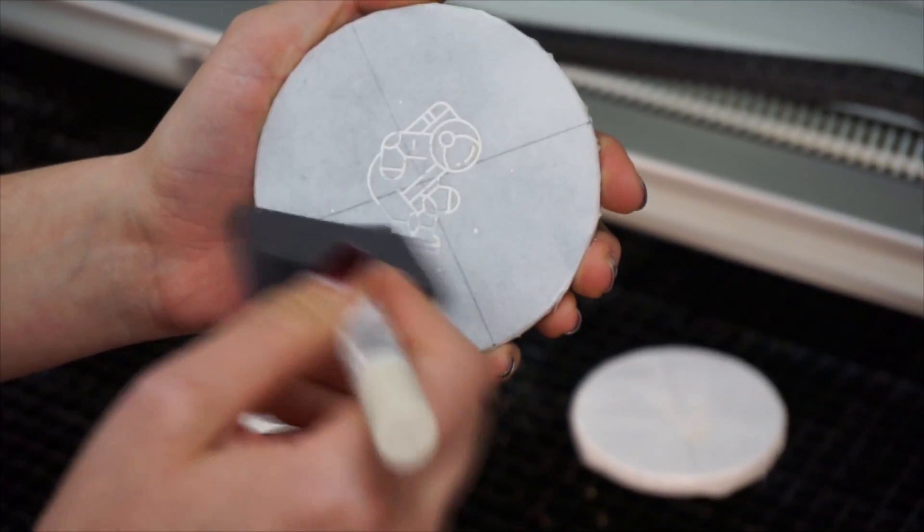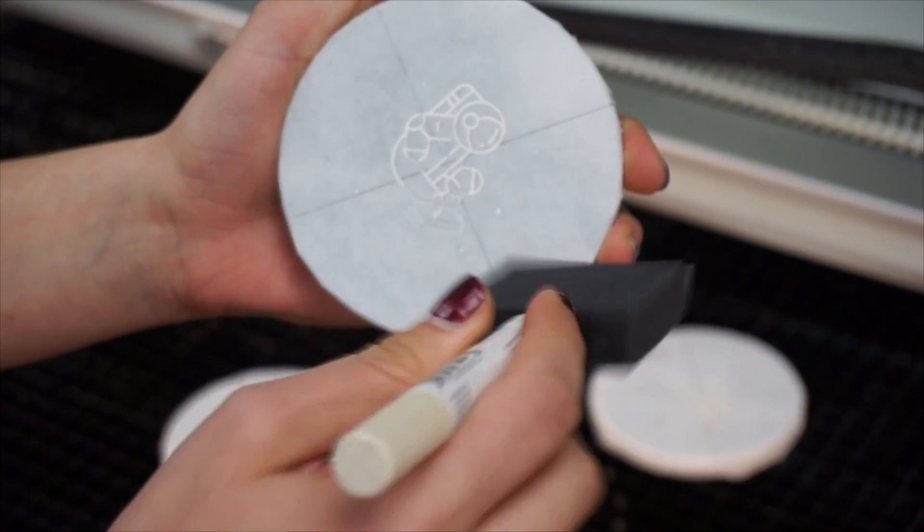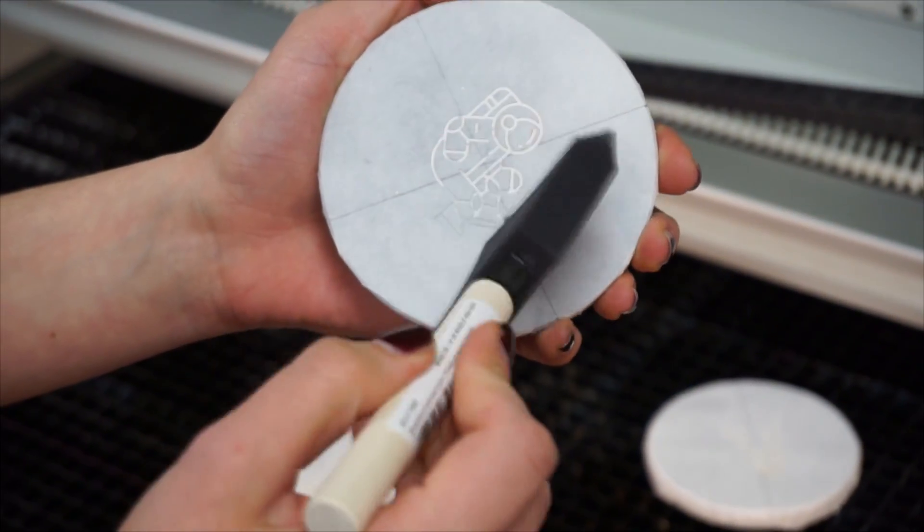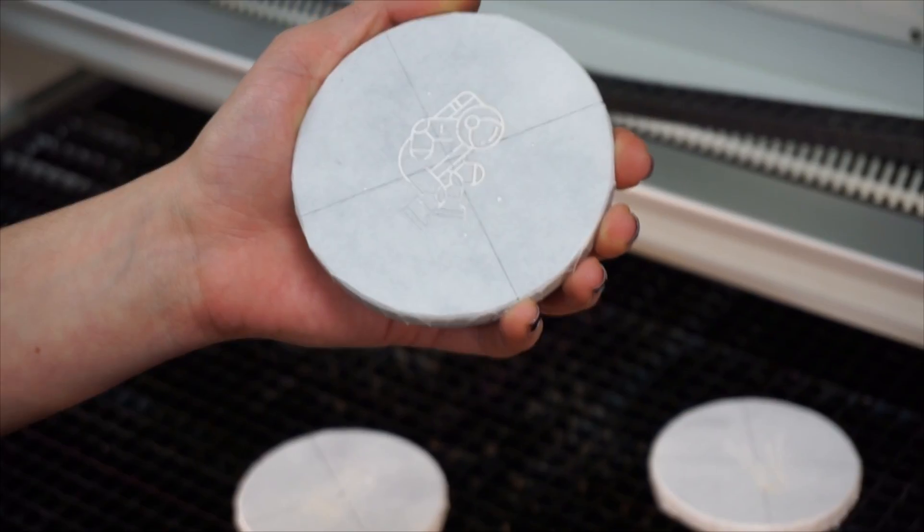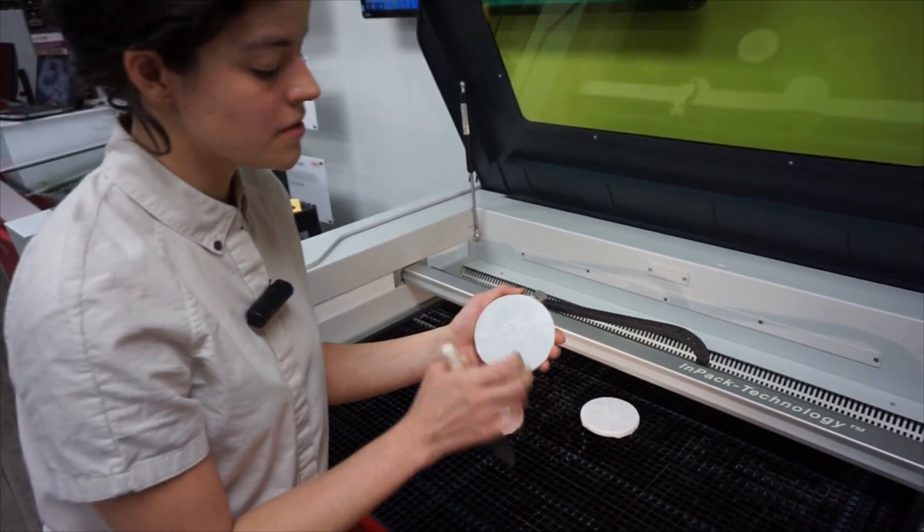At this point, you can decide if you want to just leave it etched, you can take the paper off. If you want to go on to the next step, which is to add color to this design, then you want to make sure that the paper stays on.